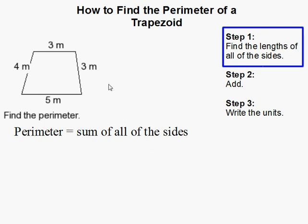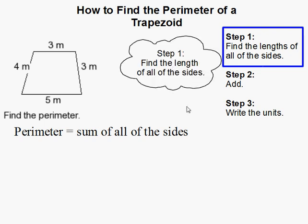So the first thing we have to do is find the lengths of all the sides of our trapezoid. In this case, all of the sides are given.